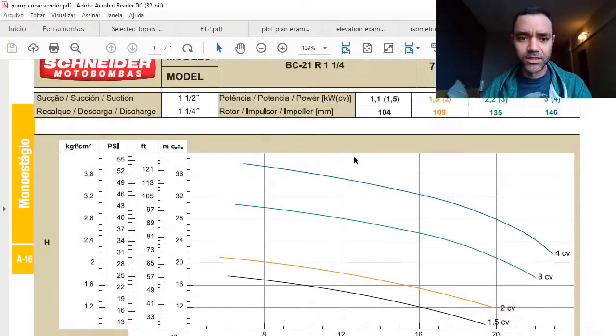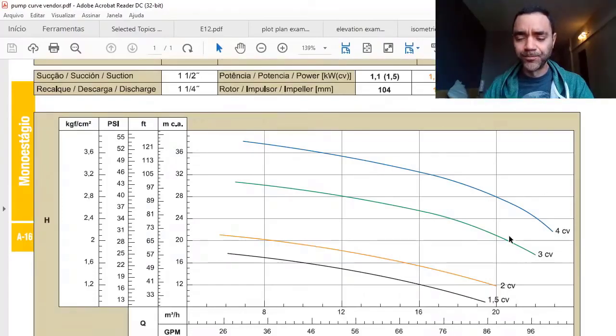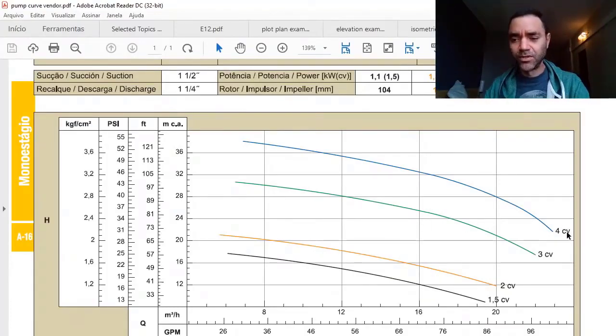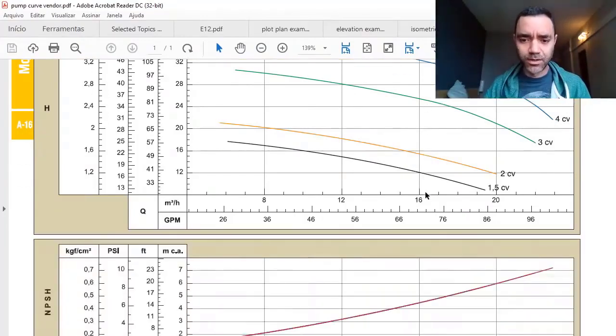We have here the curves according to each impeller size—you see blue is 148 millimeters, 135 millimeters, 109 millimeters. We've seen that the power increases as we increase the impeller, because for the same flow we have more head, so we're increasing the power needed to run your pump.